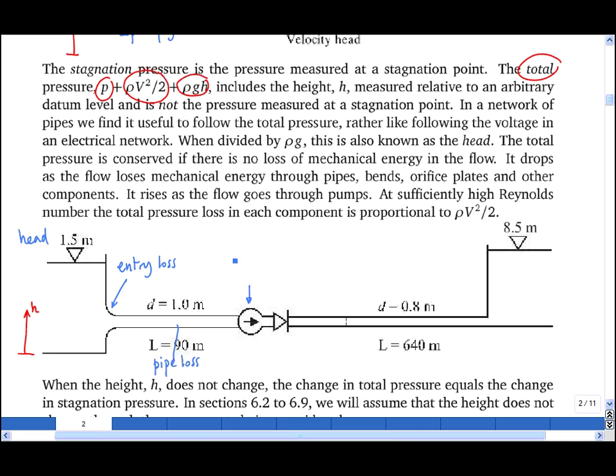Then we will have a gain in the total pressure across the pump. Then here is a valve. We will have a loss of total pressure across the valve. This is an orifice that might be being used to measure the speed of the flow.